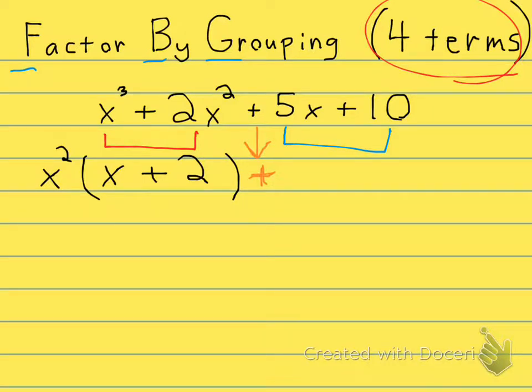Look at the second two. Look at my blue group. In my blue group, what can I take out? What's the greatest common factor? Well, I can divide out a five out of both of them. When I divide out the five, what am I left with? I'm left with x plus 10 divided by five is two. Now, this is not a coincidence that x plus two is the same as this x plus two. They are both the same.